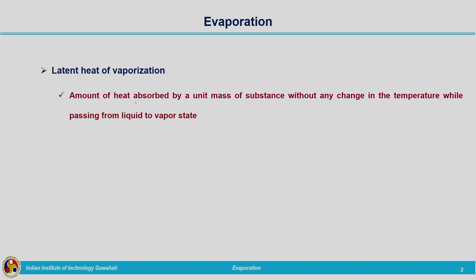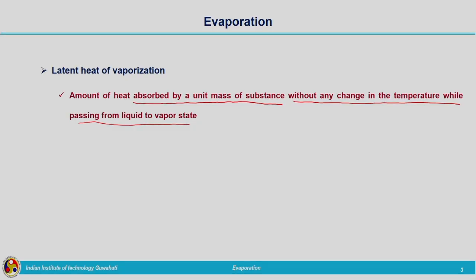Latent heat of vaporization is the amount of heat absorbed by unit mass of substance without any change in temperature while passing from liquid to vapor state. After absorbing this heat energy, the energy level increases, converting the substance from liquid state to vapor form. The amount of heat energy absorbed by unit mass of substance when it changes from liquid to vapor state without any temperature change is the latent heat of vaporization.